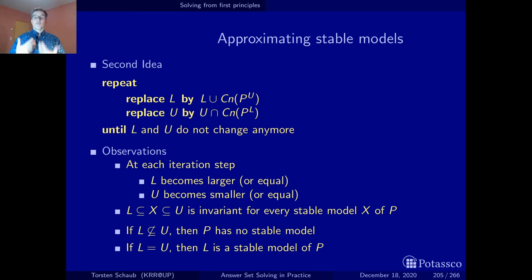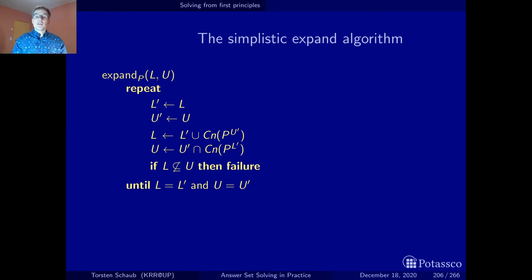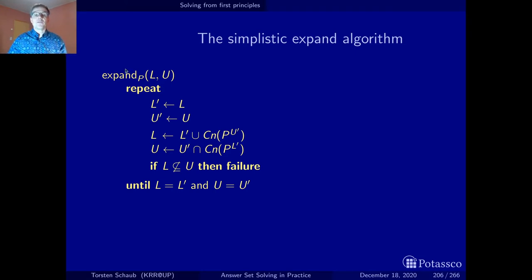These are the basic ingredients for what we call a propagation algorithm. Propagation means you have a program and want to compute deterministically the truth values of variables as far as possible. I call the procedure 'expand' — not only because it expands the true and false atoms we gather about our normal logic program, but also because the propagation procedure of the very first ASP solver Smodels shared the same name.